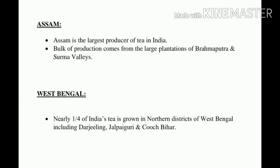Next, West Bengal. Nearly one-fourth of India's tea is grown in northern districts of West Bengal including Darjeeling, Jalpaiguri and Cooch Behar. Darjeeling tea is well known for its flavour and is in much demand in national and international markets. Another important tea-growing zone exists in South India including Tamil Nadu, Kerala and Karnataka.